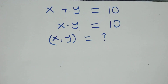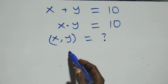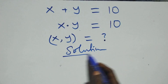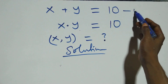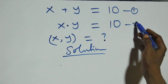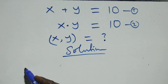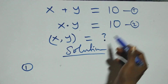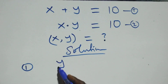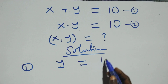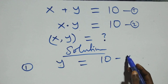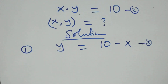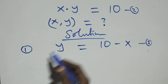Hello, you're welcome. How to solve this nice algebraic equation. Let's label the first equation as equation 1 and the second as equation 2. From equation 1, we make y the subject by taking x to the right hand side, then we have y equals 10 minus x, and we label this as equation 3.